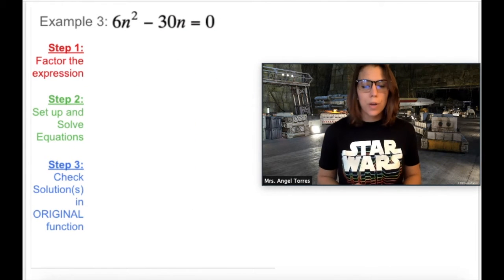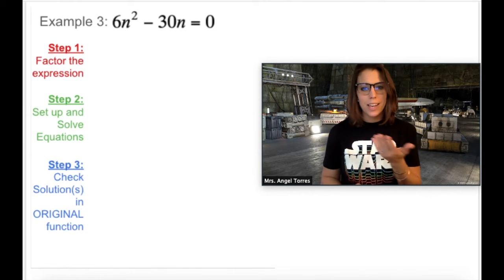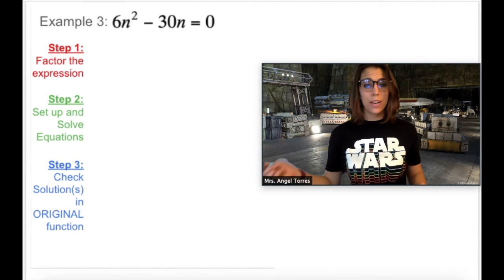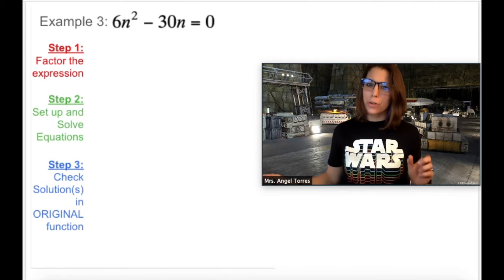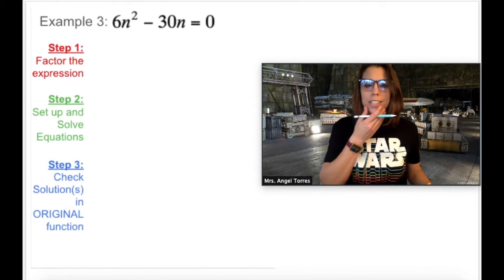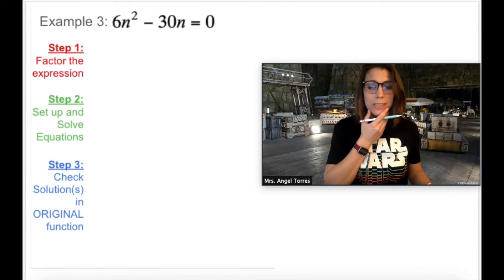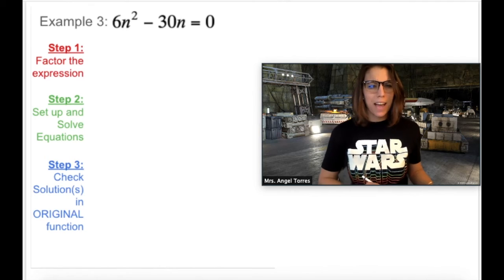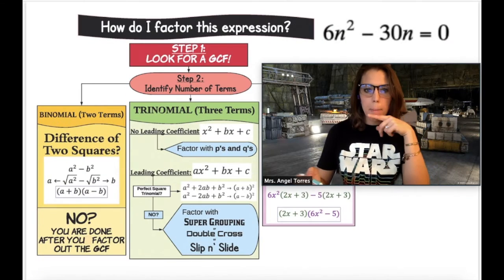On to example 3. Ooh, this one's a tough one. This is actually in standard form. It's just missing that third term, that constant. So that means this is a binomial. Let's see what method we would use to factor. Okay, so we're looking at a binomial, which means that we're looking at the yellow box.